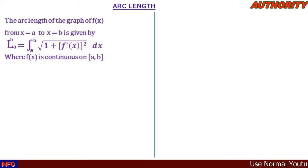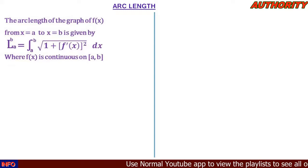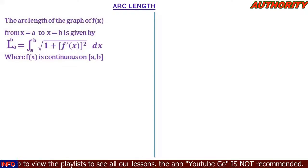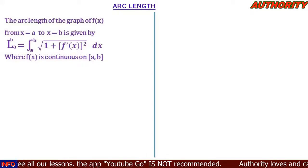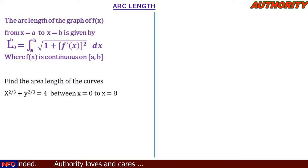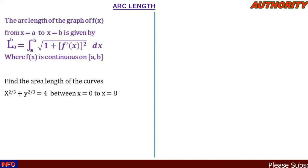This is how to solve for arc length of a curve. When you are given a curve to find its arc length, you make use of the formula: L = integral from a to b of square root of (1 + [f'(x)]²) dx. Now let's look at this question: find the arc length of the curve x^(2/3) + y^(2/3) = 4, between x = 0 and x = 8.